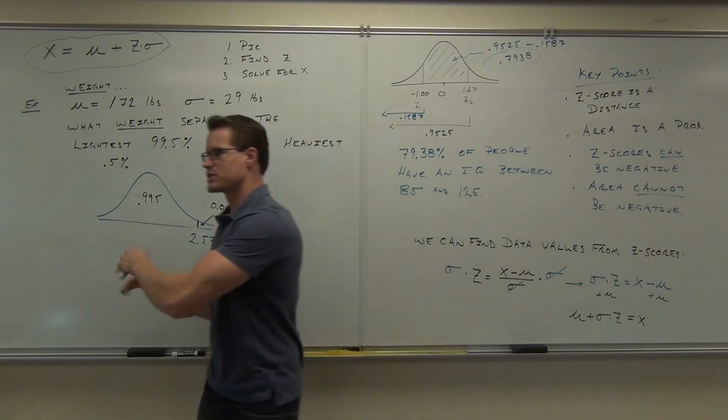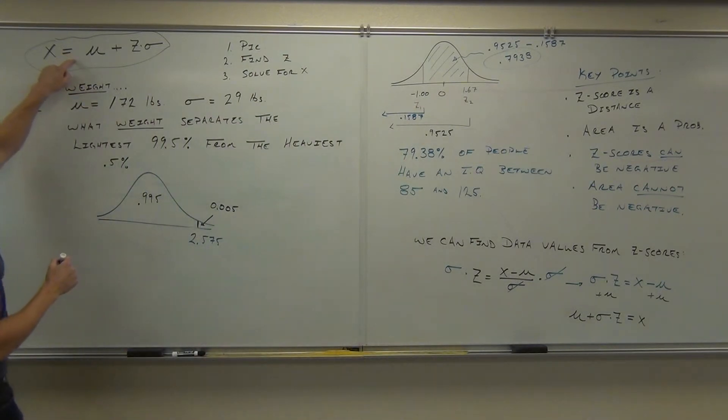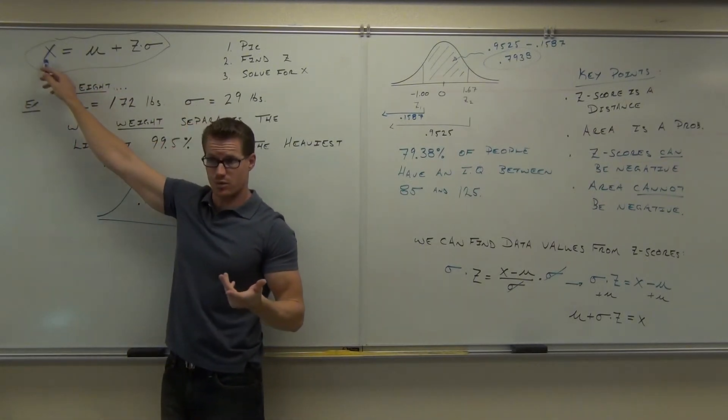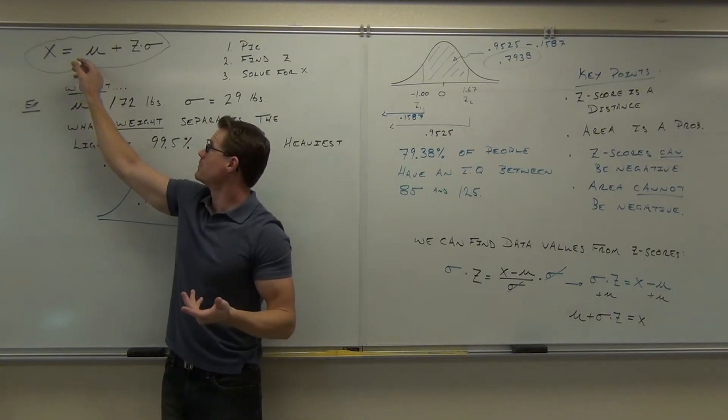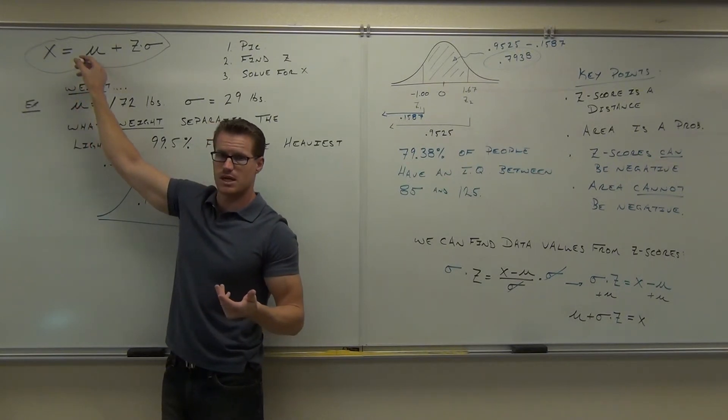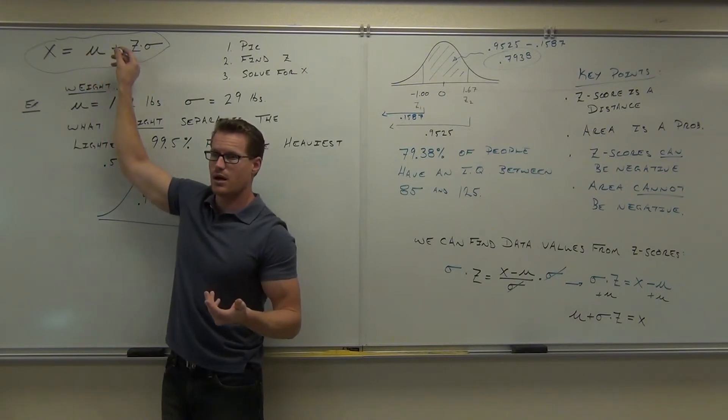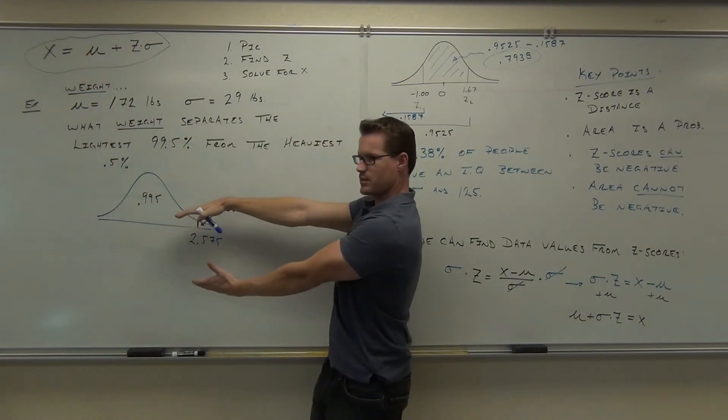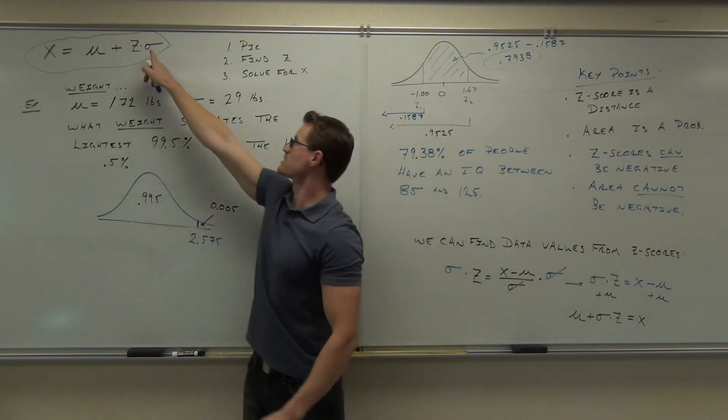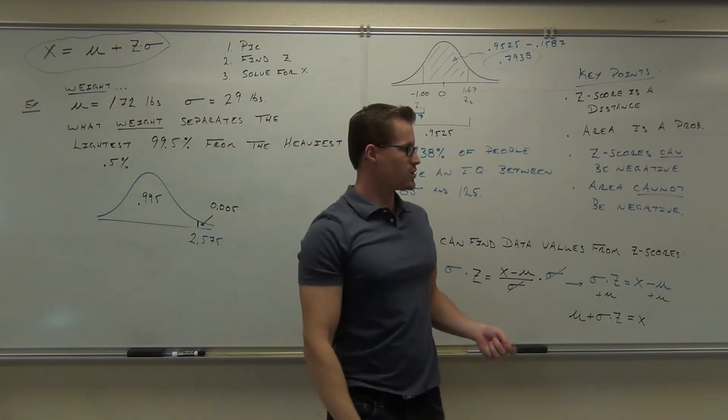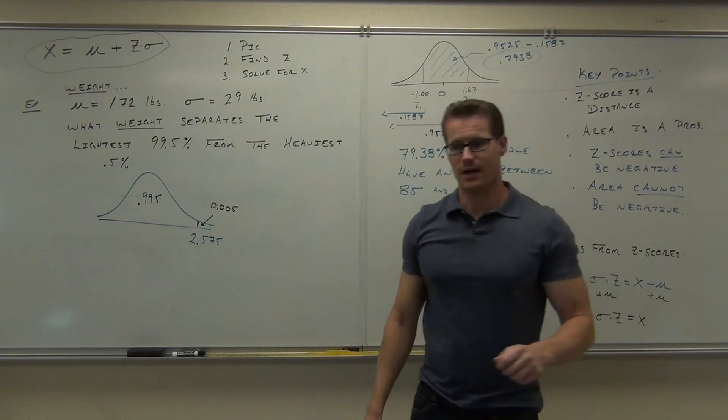Now, lastly, since we have our z-score, we now have this information. Let's see if we know what all this information is. Do you know what the x value is? No. That's what we're trying to find. That's the weight. Do you know what the mu is? How much is that? 172. Do you know what the z is? That's what we just spent all this time finding. 2.575. Do you know what the sigma is? Yes. That's 29. I want you to plug the information into that formula and find out the x value, okay?